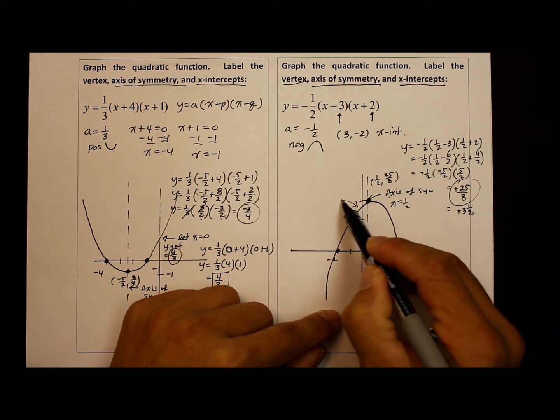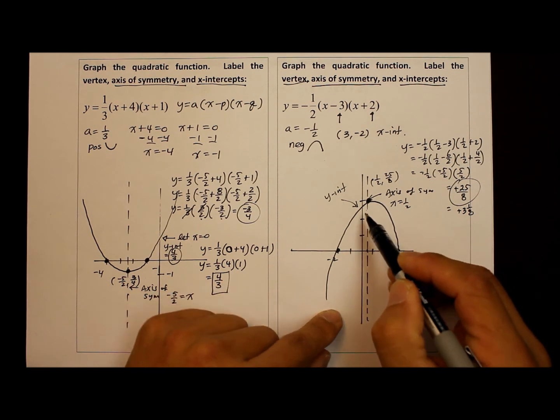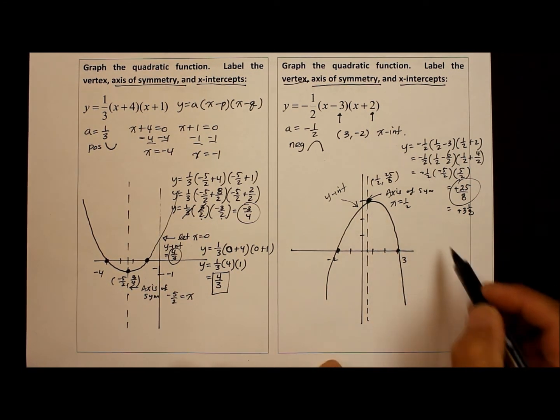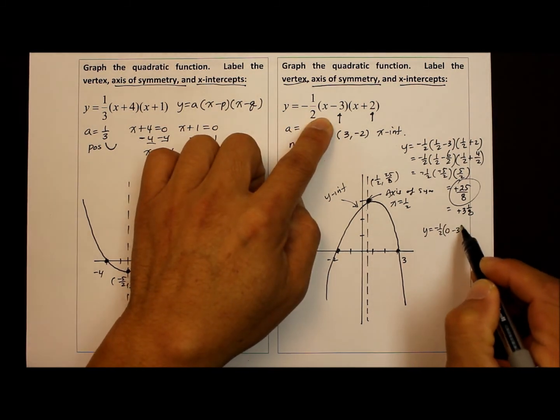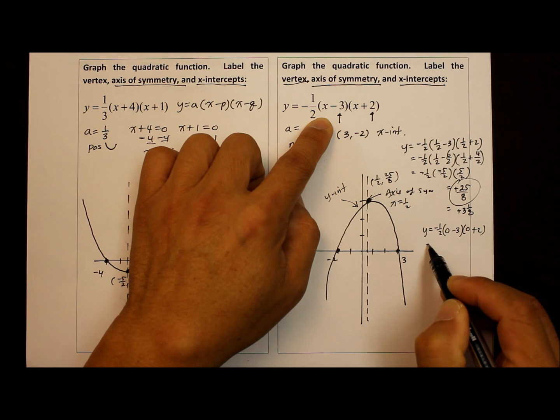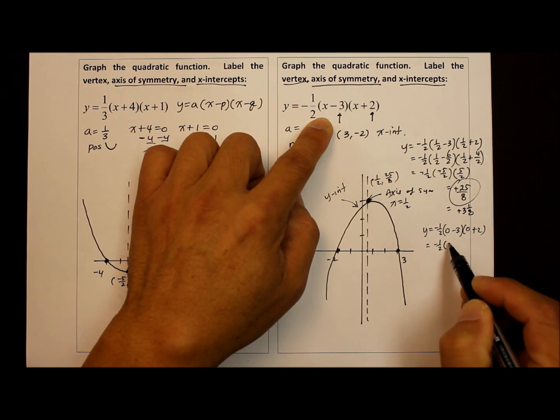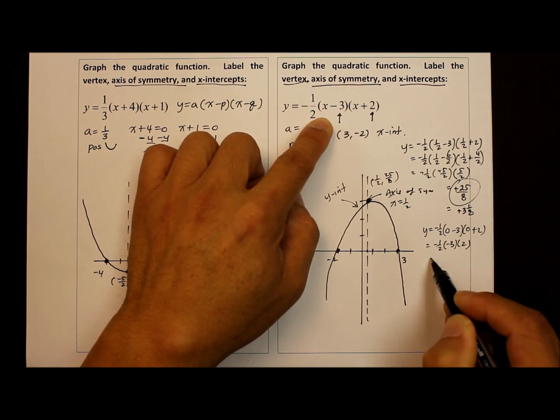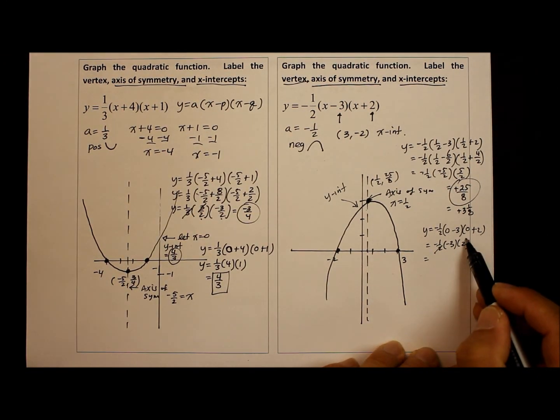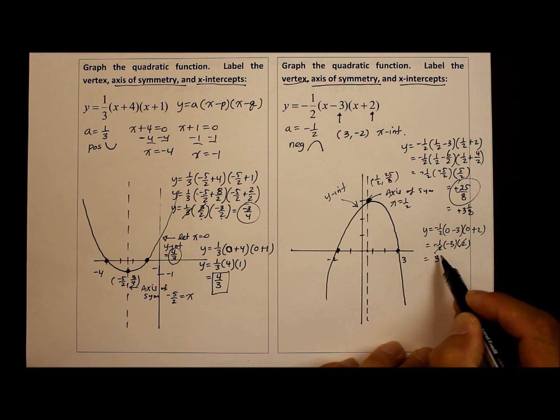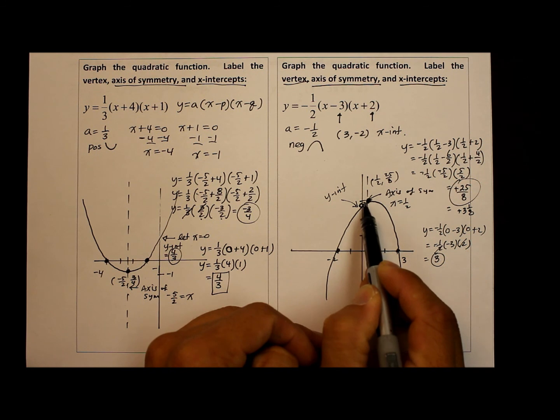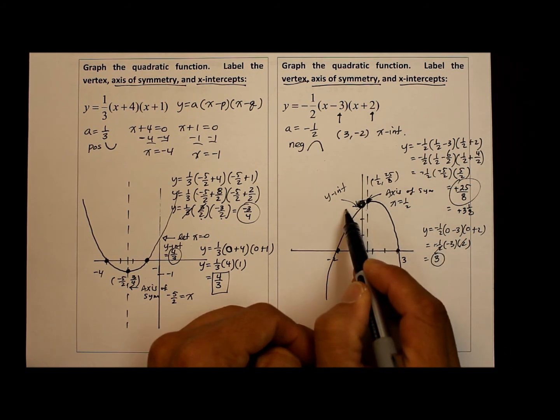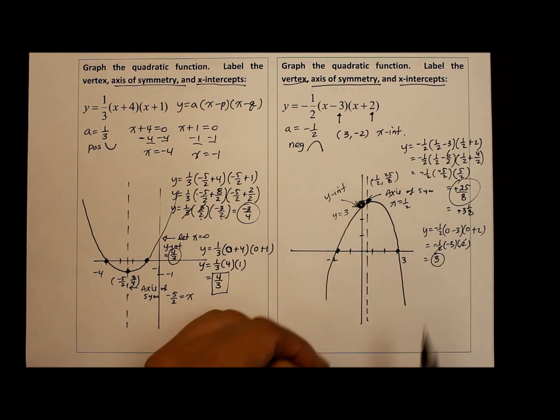Now for those perfectionists, what is the y-intercept? Well again, that's when the x becomes zero. So all we have to do is take the original function again and substitute the x with zero and evaluate. So we have negative one over two times negative three times two. Let's simplify here. Two cancels out. So negative one times negative three is positive three. So the y-intercept is three.